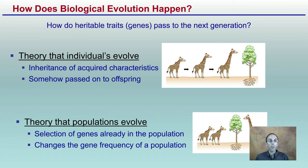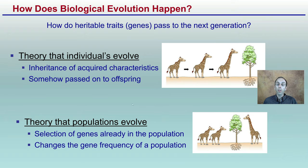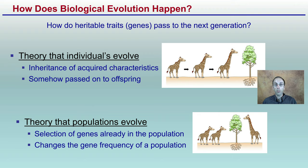How does biological evolution happen? There are two main ideas on how traits or genes can be passed on to the next generation. One theory is that individuals evolve, where inheritance of acquired characteristics are somehow passed on to the offspring — the concept that with leaves being at the highest point on trees, because giraffes stretch their necks to constantly eat, those individuals evolve to have longer necks that then go on to the next generation.